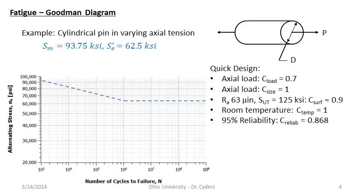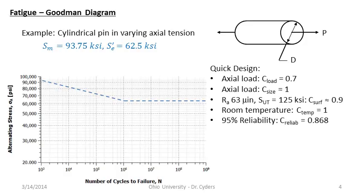Applying our correction factors: it's an axial load so C_load is 0.7, giving a 30% additional reduction on SE'. For axial loads, C_size is not used — it's an important variable for bending or torsion where outer fibers are stressed, but not here. The models for C_size really only apply to steel, so we don't have great models for aluminum with the stress-life approach. If you need more buffer, use a higher factor of safety.